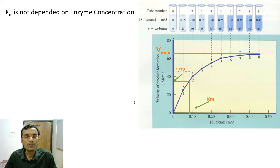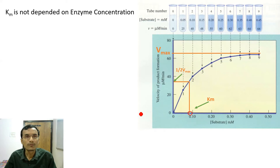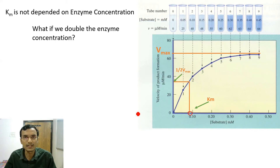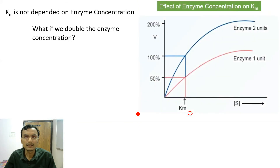Km is independent of enzyme concentration — it depends on substrate concentration. So what happens if we double the enzyme concentration? The Km value will not change. However, Vmax may double, but Km remains constant. We will see this with the following example.